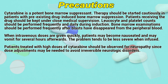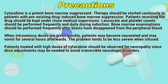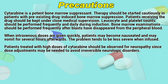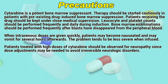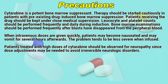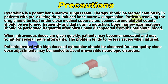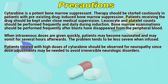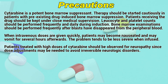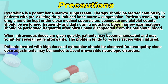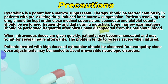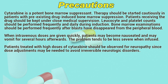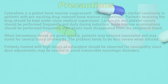Precautions: Cytarabine is a potent bone marrow suppressant. Therapy should be started cautiously in patients with pre-existing drug-induced bone marrow suppression. Patients receiving the drug should be kept under close medical supervision. Leukocyte and platelet counts should be performed frequently and daily during induction. Bone marrow examination should be performed frequently after the blasts have disappeared from the peripheral blood. When high doses are given quickly, patients may become nauseated and may vomit for several hours afterwards. The problem tends to be less severe when infused. Patients treated with high doses of Cytarabine should be observed for neuropathy, since dose adjustment may be needed to avoid reversible neurologic disorders.